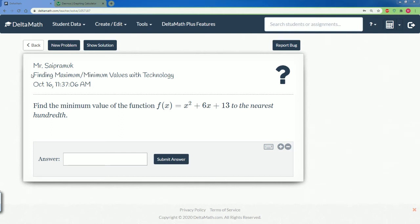Welcome, this is for IM2. This is a video lecture covering Delta Math. Here I'm going over a solution for Delta Math on finding the maximum or minimum values with technology. It says find the value of this function f of x equals x squared plus 6x plus 13 to the nearest hundredths, and to do technology you have to make sure you pull up Desmos.